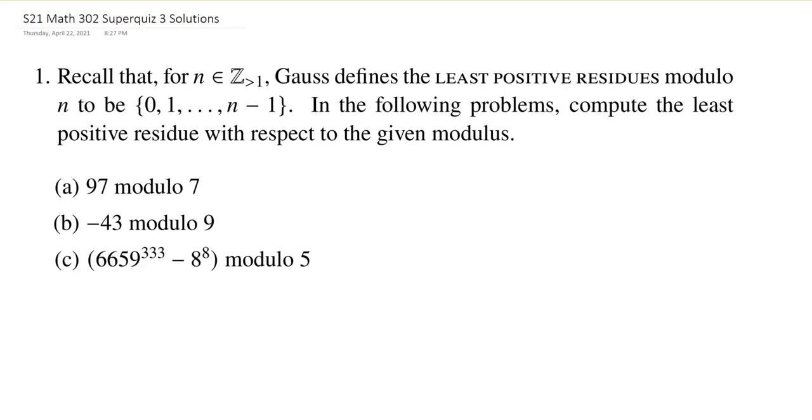This is the first problem from the Super Quiz. And here we're reminded at the beginning that Gauss confusingly defined the least positive residues modulo sum number n to be the numbers 0 through n minus 1. Of course, it's a little bit confusing because he calls them positive residues and 0 isn't a positive number. But we have to overlook it. And it's Gauss. And we don't question Gauss.